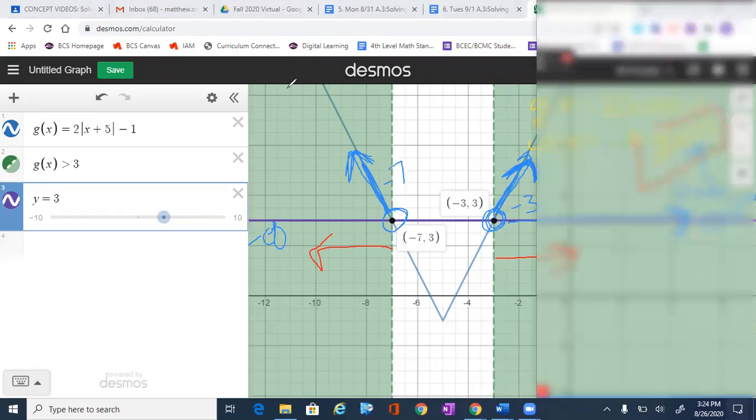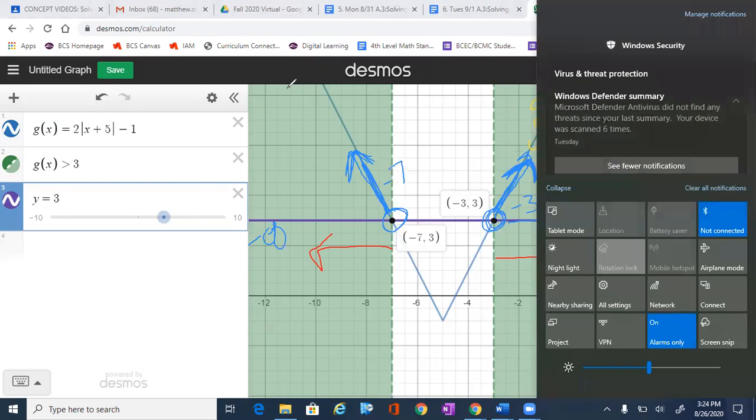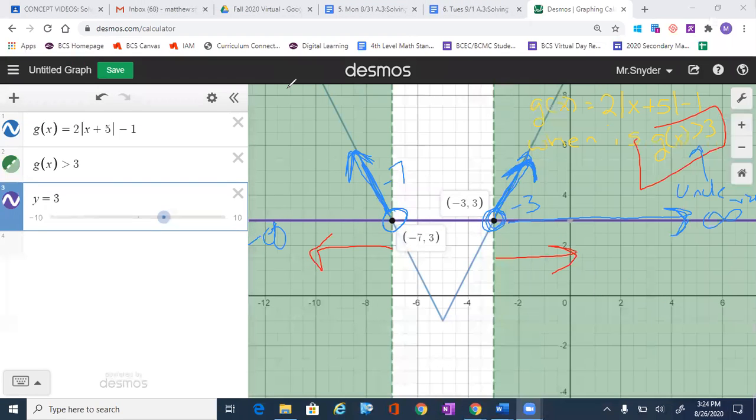Let me get that off my screen. In order to write this, I'm going to say the answer must be negative 3 comma infinity. It should also be negative infinity first, and then negative 7, and I'm going to put this or right there.